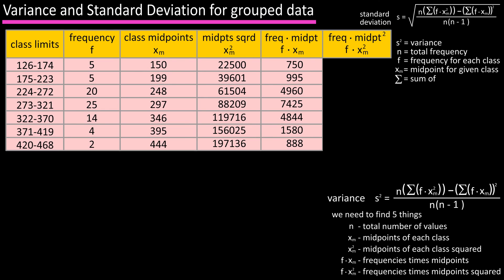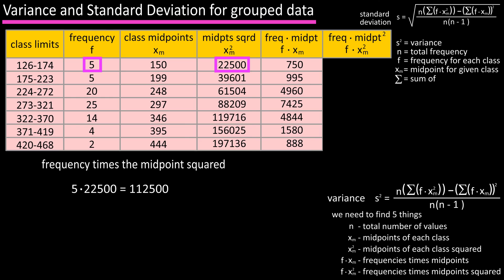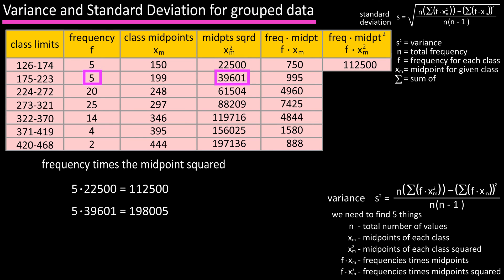For column 6, we multiply the frequency for each class by the midpoint squared for each class. For class 1: frequency 5 × xm² 22,500 = 112,500. For class 2: frequency 5 × xm² 39,601 = 198,005. Continue this process for the remaining classes as shown.